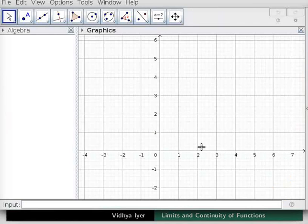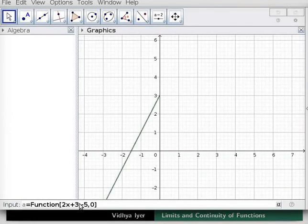Let us open a new GeoGebra window. In the input bar, type the following line. This chooses the domain of x from minus 5 for practical purposes to 0. Press Enter.